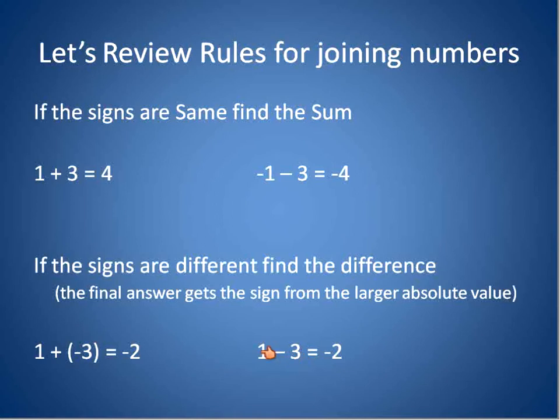This is the same question written in a slightly different way. 1 minus 3 is negative 2. Again, the sign of negative. This one has an implied sign of positive. The signs are different. You find the difference between the two numbers. 3 minus 1 is 2. And then the sign comes from the larger number. So in this case, 3 is larger than 1. Negative.